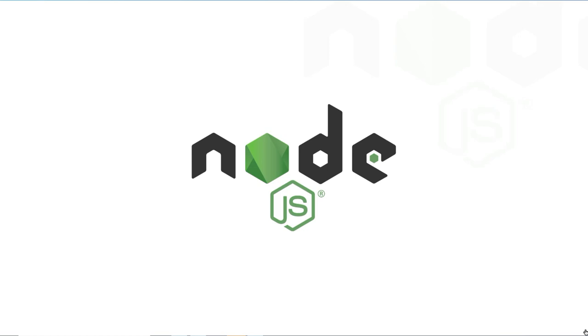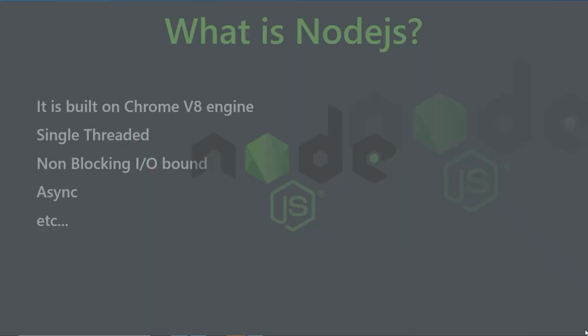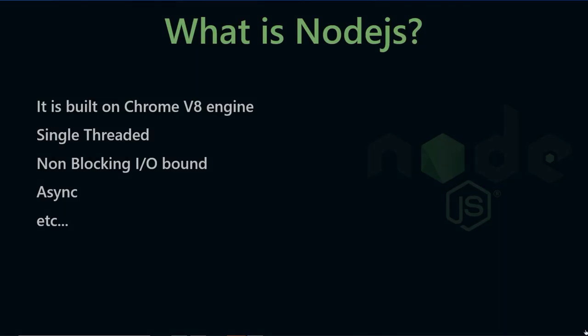Let's start with Node.js. What is Node.js? It is built on Chrome's V8 engine — single-threaded, non-blocking, I/O, and async. This is how we normally describe it.